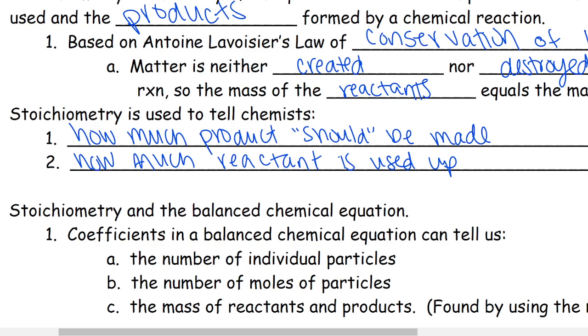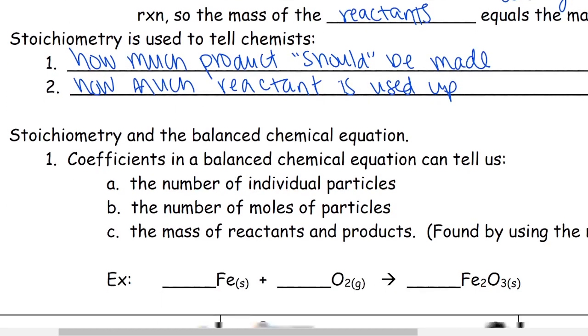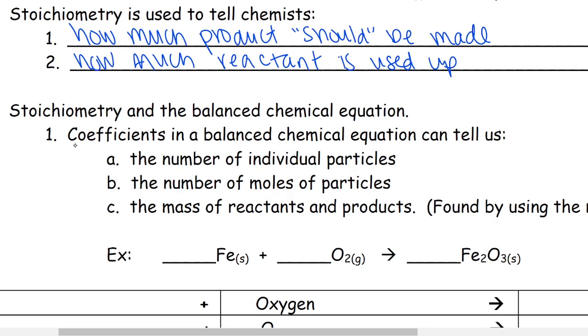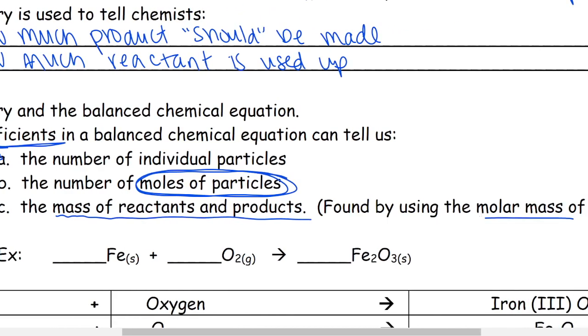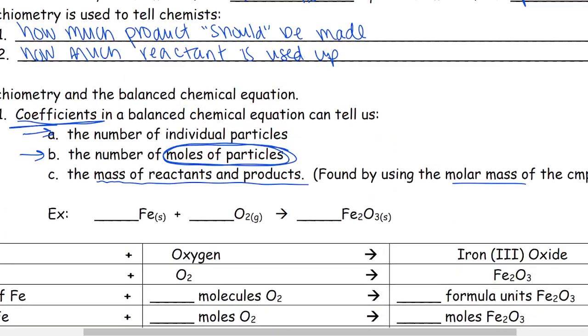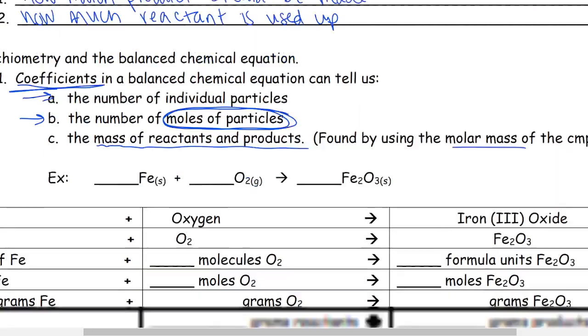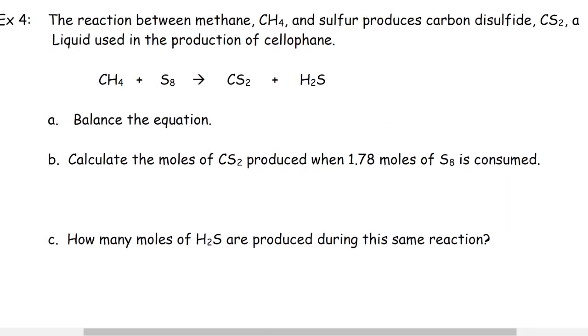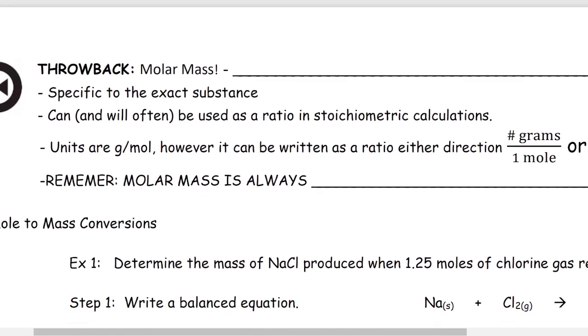Stoichiometry is really based around the balanced chemical equation. We will use the coefficients in our balanced chemical equation to tell us the number of individual particles and the number of moles of particles. We can also figure out the mass of the reactants and products using that mole ratio from our balanced chemical equation and the molar mass. I want to jump down to page three where it says molar mass at the top.